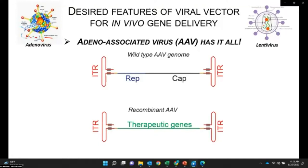To engineer the wild-type AAV genome into a therapeutic vector, the two protein-encoding genes, REP and CAP, were removed. Instead, the therapeutic cassette was incorporated into the virus genome. Only the packaging signal was retained in the therapeutic vector, which is still sufficient to produce the AAV virus.